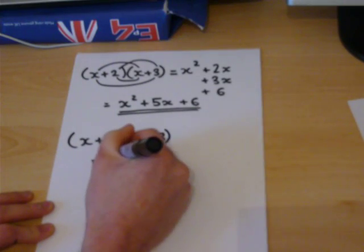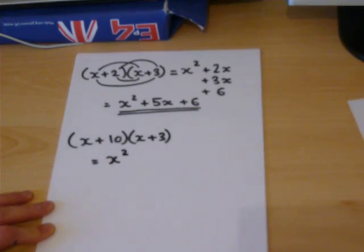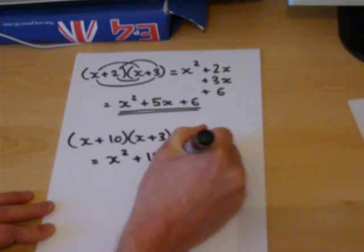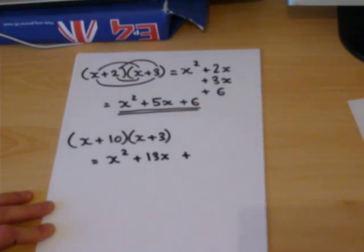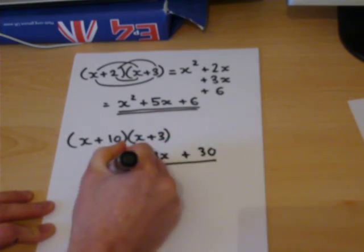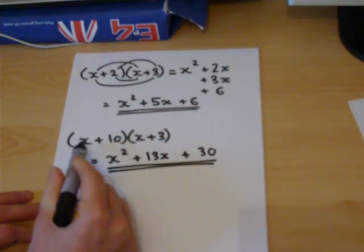The x and the x gives us x squared when times together. We have a 10 and a 3, which gives us 13x. And we have 10 times 3, which is 30. This works when we have an x and an x here.